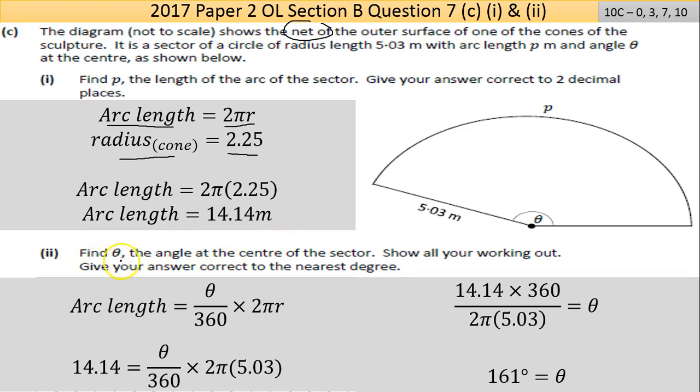Part 2: find θ, the angle at the center of the sector. A lot of people are uncomfortable with theta—it just means find the angle. Show your workings and give your answer to the nearest degree. You're looking for this angle here. You're given the radius of the shape is 5.03, and the arc length we now know is 14.14.